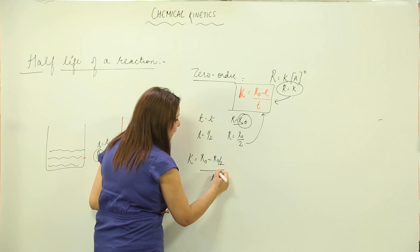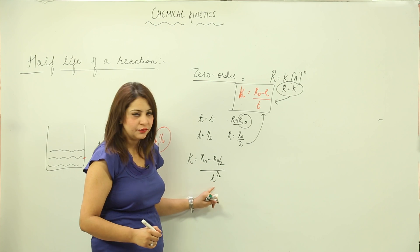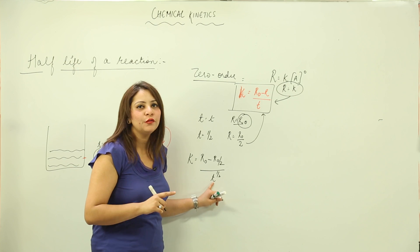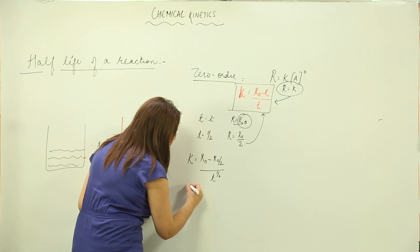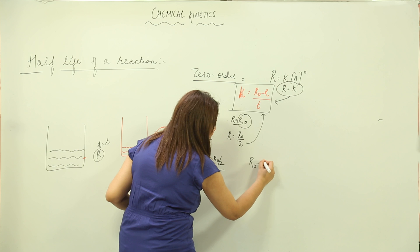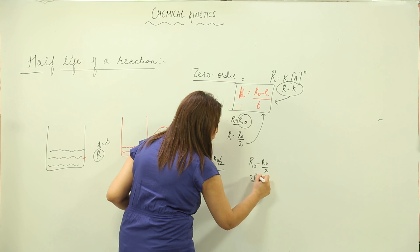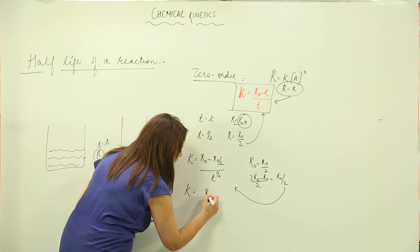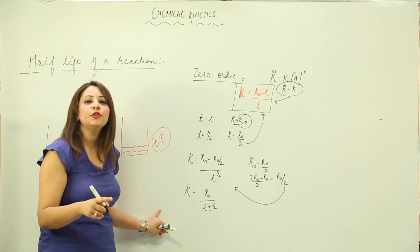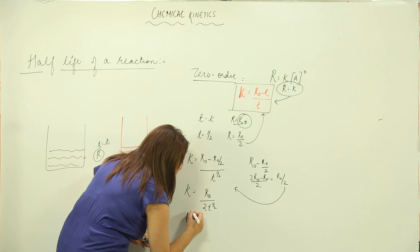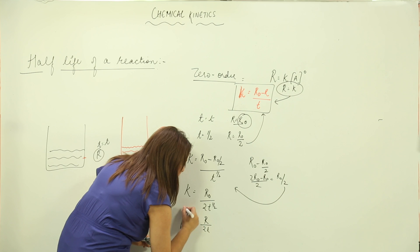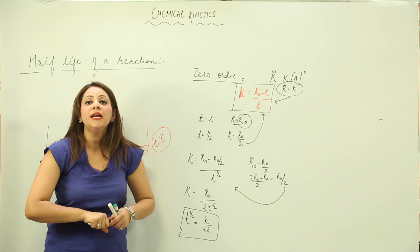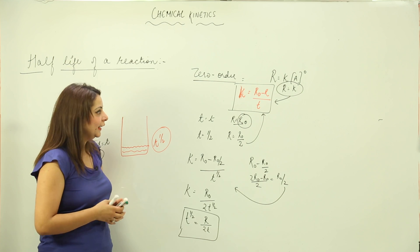Substituting into the expression: K = (R₀ − R₀/2) divided by T-half. Simplifying the numerator: 2R₀ − R₀ = R₀, so it becomes R₀/2. Therefore K = R₀ / (2 × T-half). Rearranging, the expression for T-half for a zero-order reaction becomes T-half = R₀ / (2K).